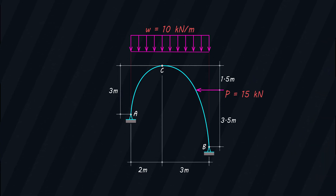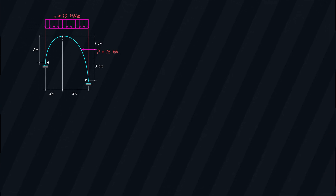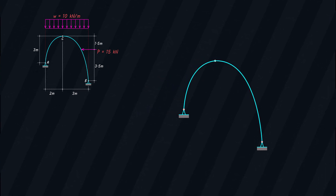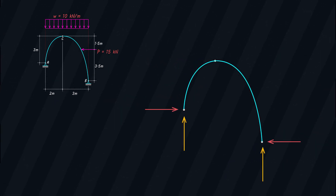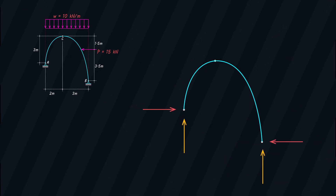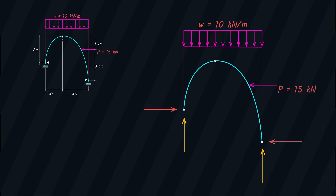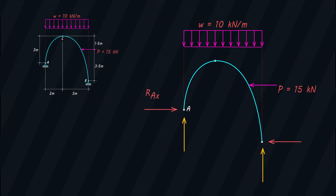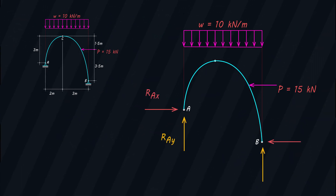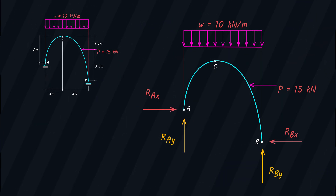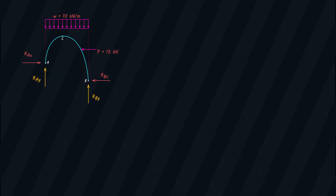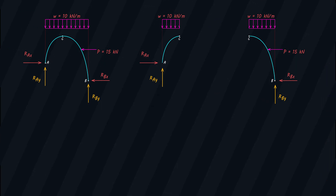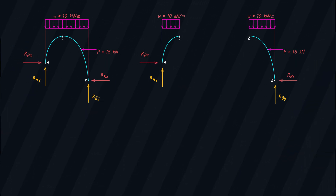What we need to do first is to draw the free body diagram. Since all supports are hinges, we will only have reactions along the x and y axes. In constructing the free body diagram, always include all the applied forces and name the reactions. At point A, we have RAX and RAY. At point B, we have RBX and RBY. This is the free body diagram for the whole structure. We also have free body diagrams for each member — for members AC and BC.